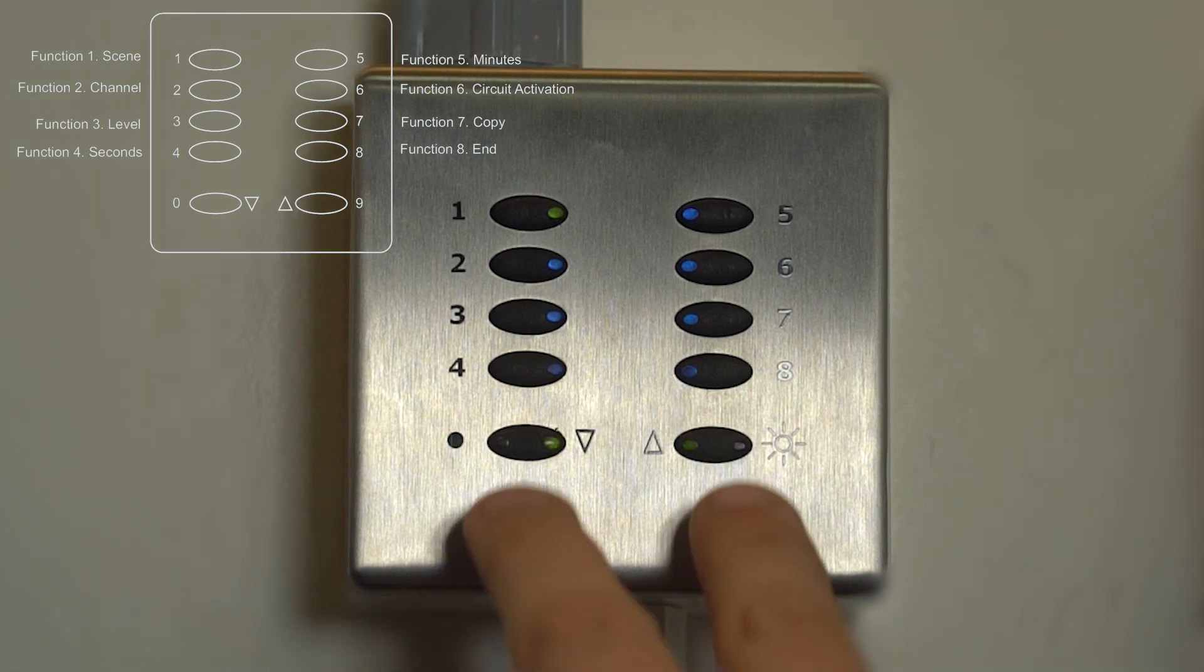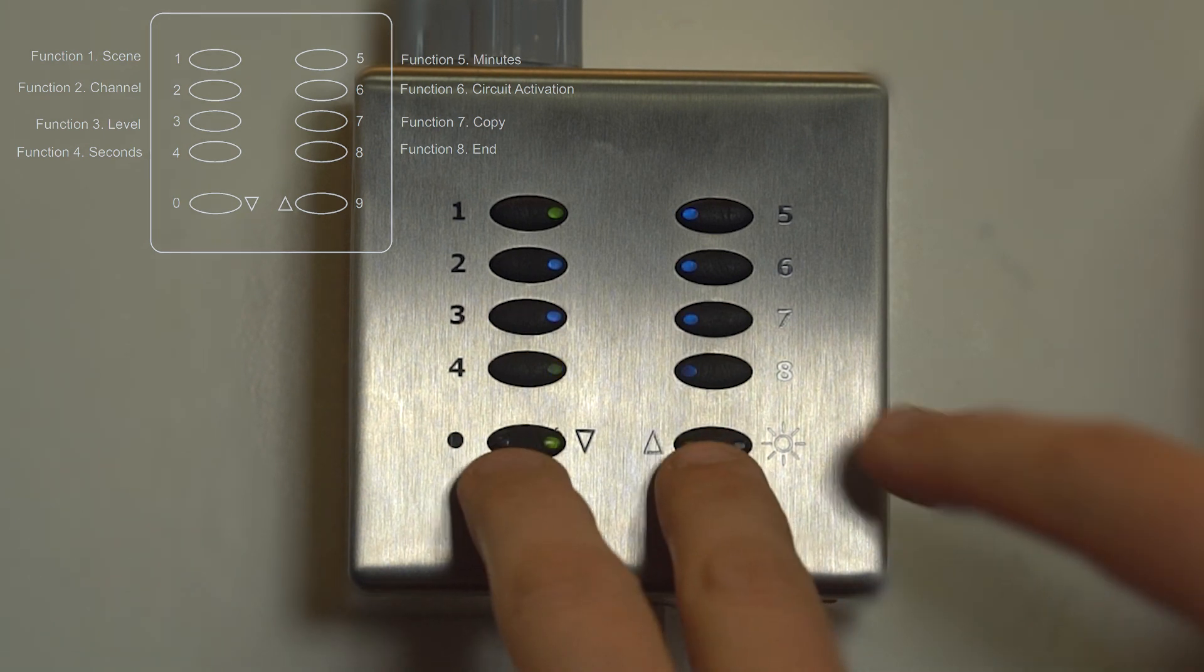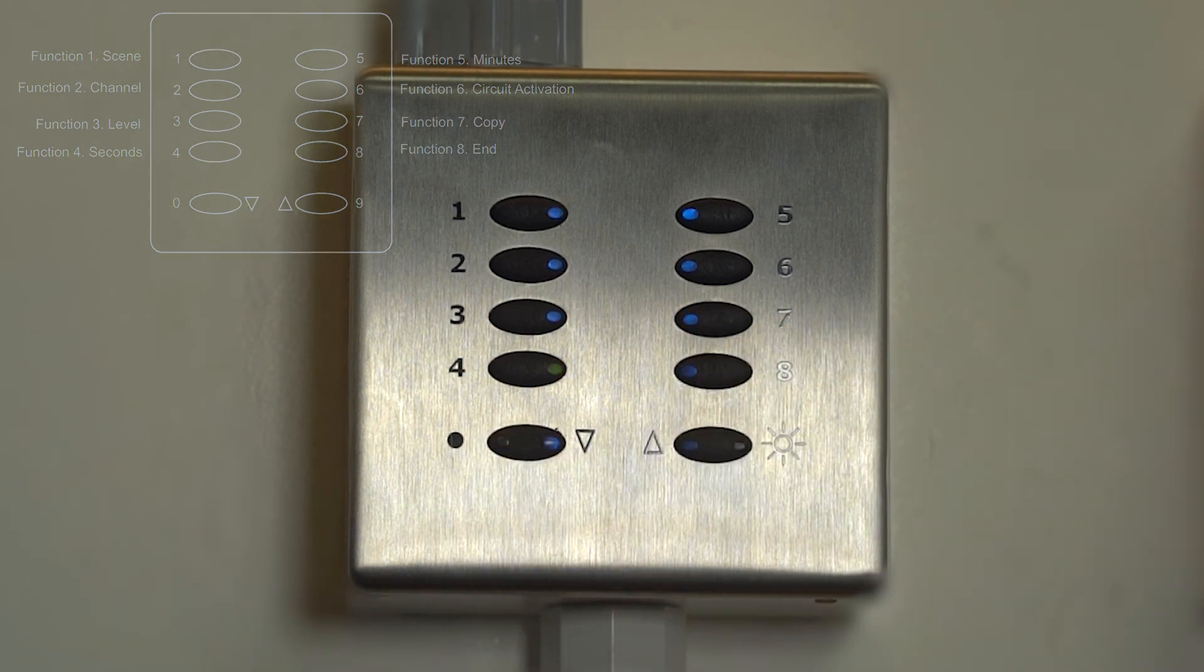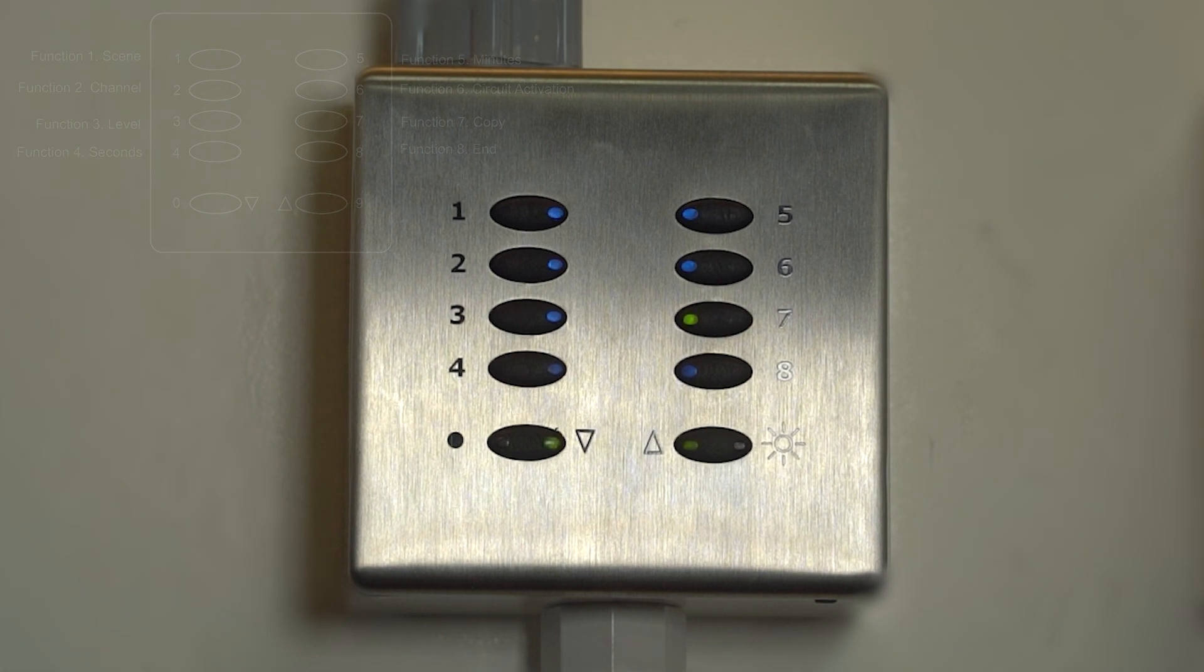Then press and hold the bottom two buttons, and then number 7, and then next will be to select the scene that you wish to have a copy of, in this case, number 4. If you then press and hold the bottom two buttons and number 8 to cancel out of programming mode, you will see that those two are now a copy, and then you could edit from there onwards.